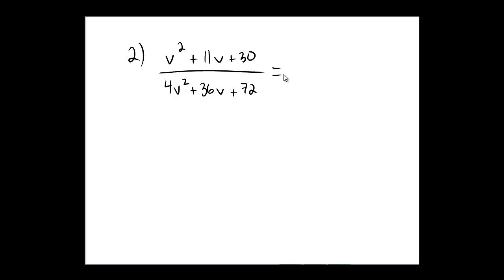Let's say equals. On the numerator, I'm going to keep that the same at the first stage here. We'll worry about it in the next stage. So v squared plus 11v plus 30 over, in the denominator, 4, 36, and 72 have a GCF of 4.